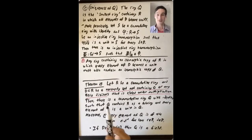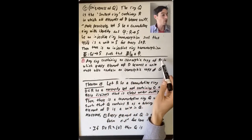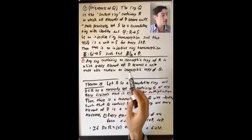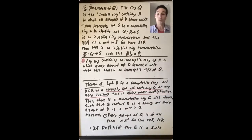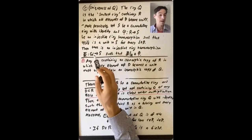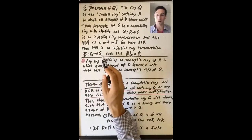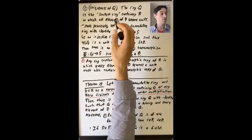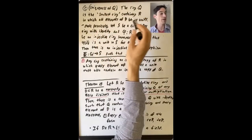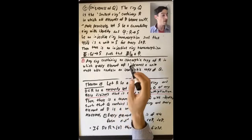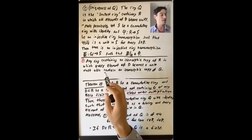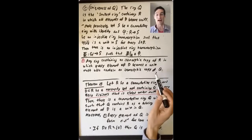What this is really saying is that any ring that contains an isomorphic copy of R in which every element of D becomes a unit — think S in this statement — also contains an isomorphic copy of Q. The first isomorphism theorem says the image of this injective ring homomorphism is a subring of S isomorphic to Q. So Q is the smallest ring containing R in which all elements of D become units.